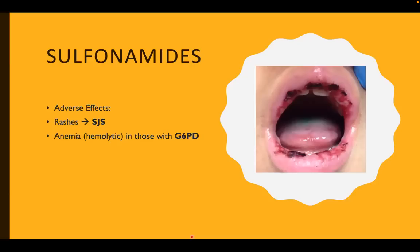What about sulfonamides? One of the most important pearls to remember is that sulfonamides are the number one cause of Stevens-Johnson syndrome. You should also avoid sulfonamides in patients who have glucose-6-phosphate dehydrogenase deficiency.